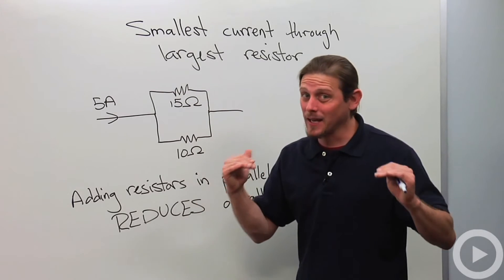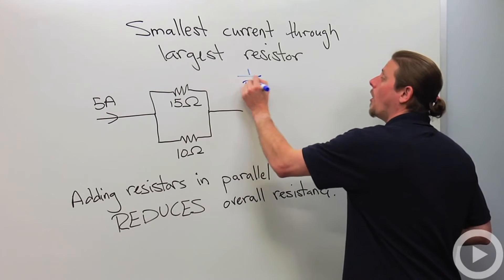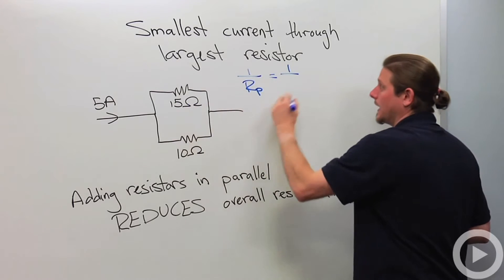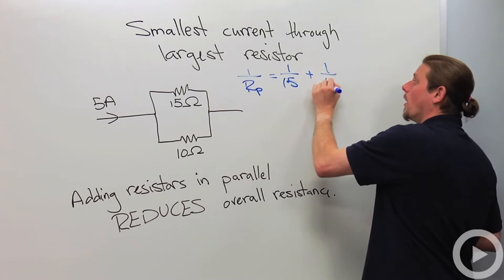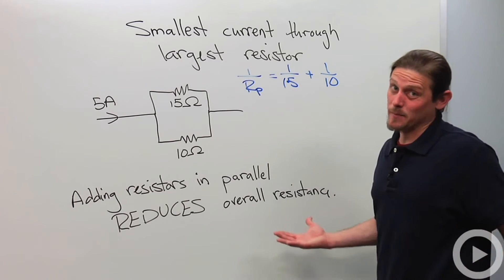What we're going to do first is we're going to add these two resistors in parallel. Now remember, adding in parallel is a little bit tricky. So we'll say 1 over our parallel equals 1 over 15 plus 1 over 10. Now,